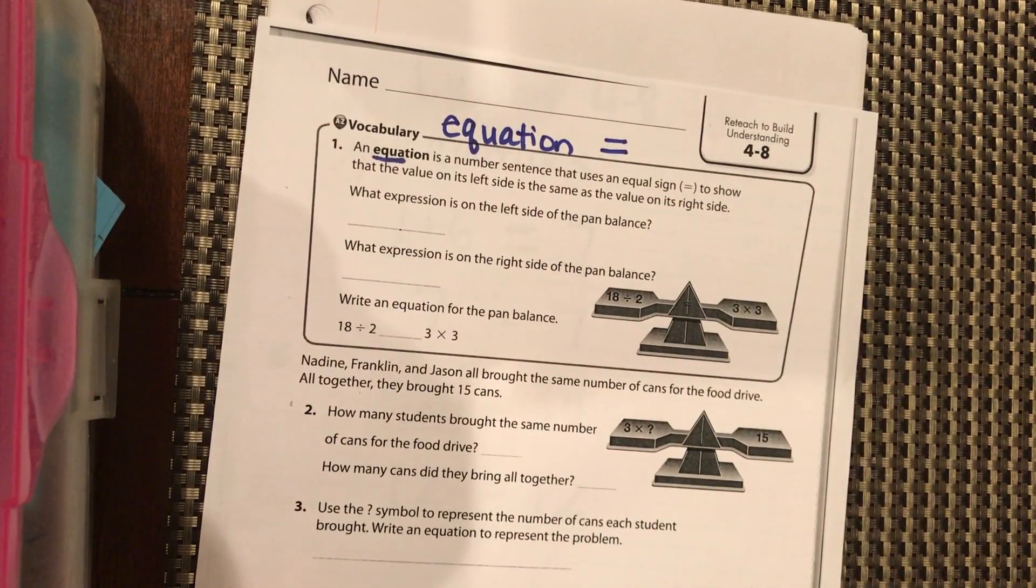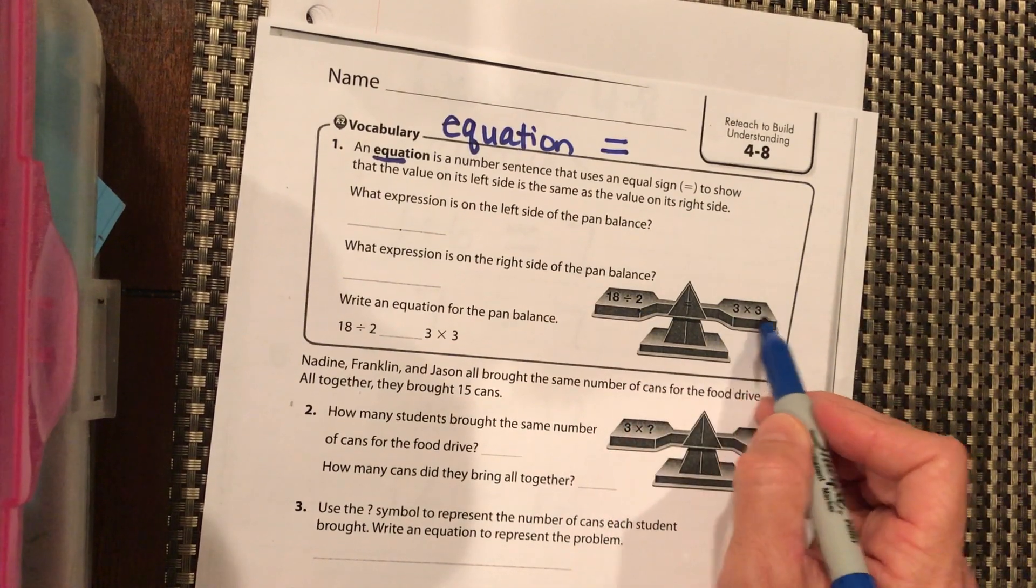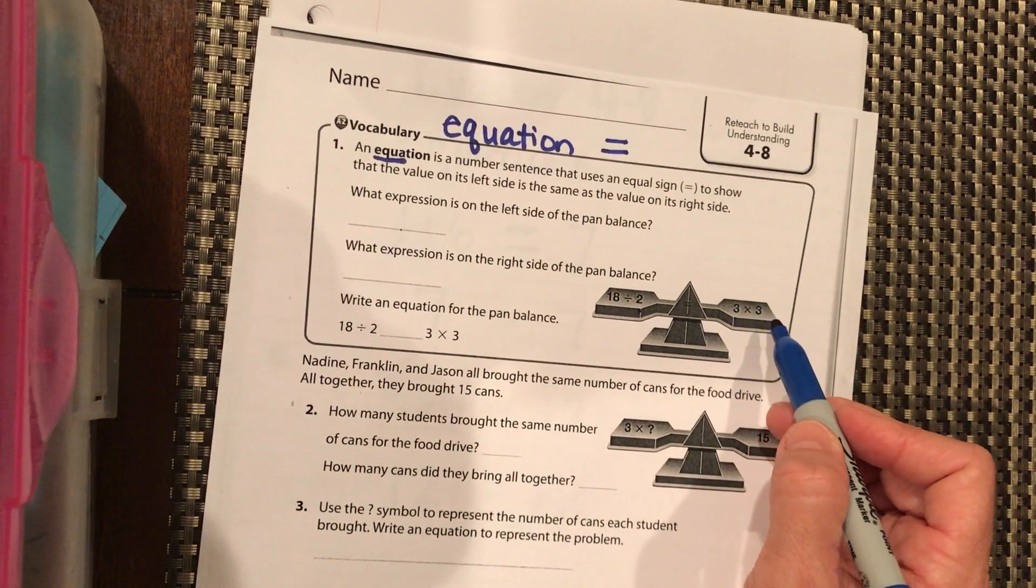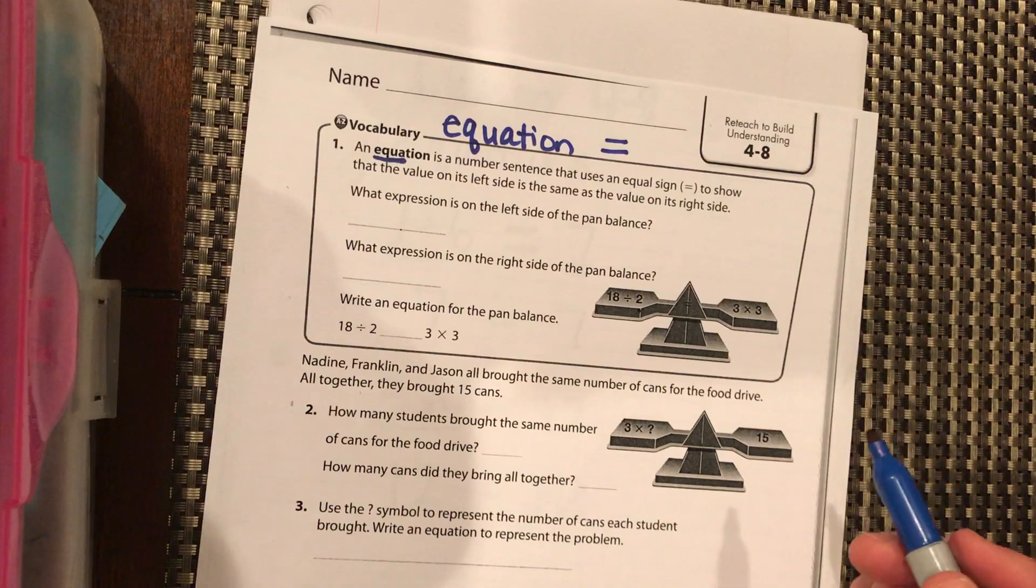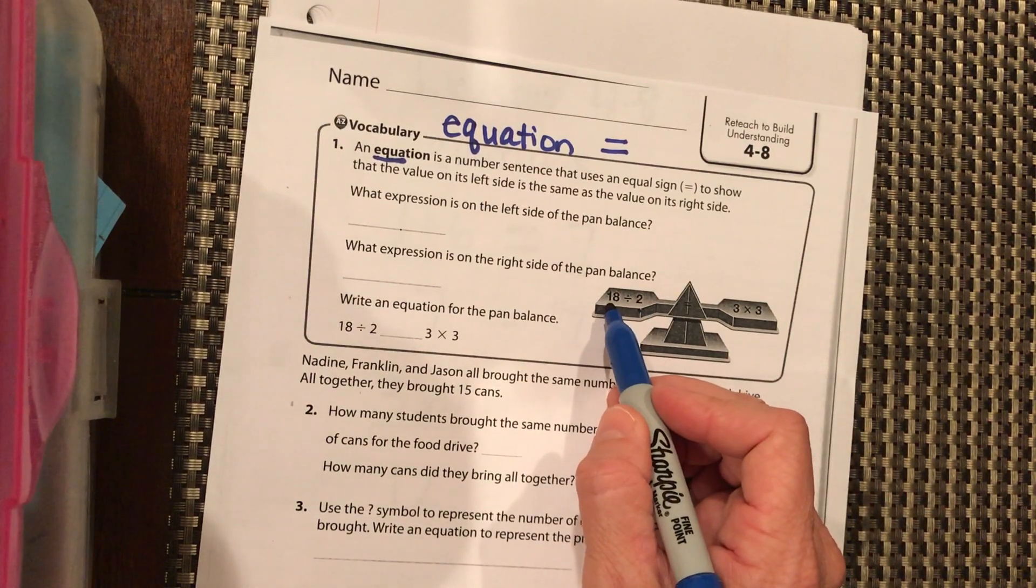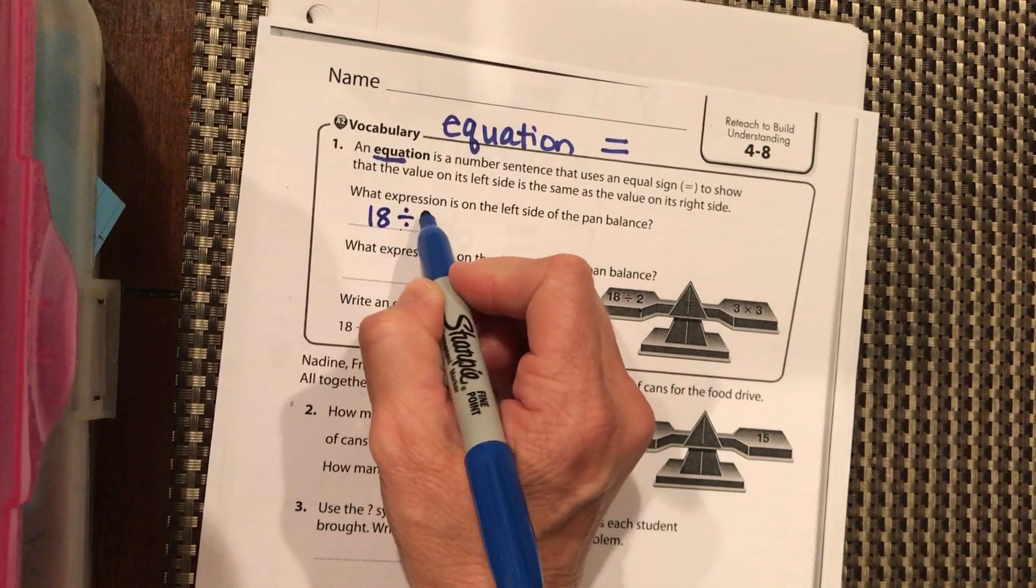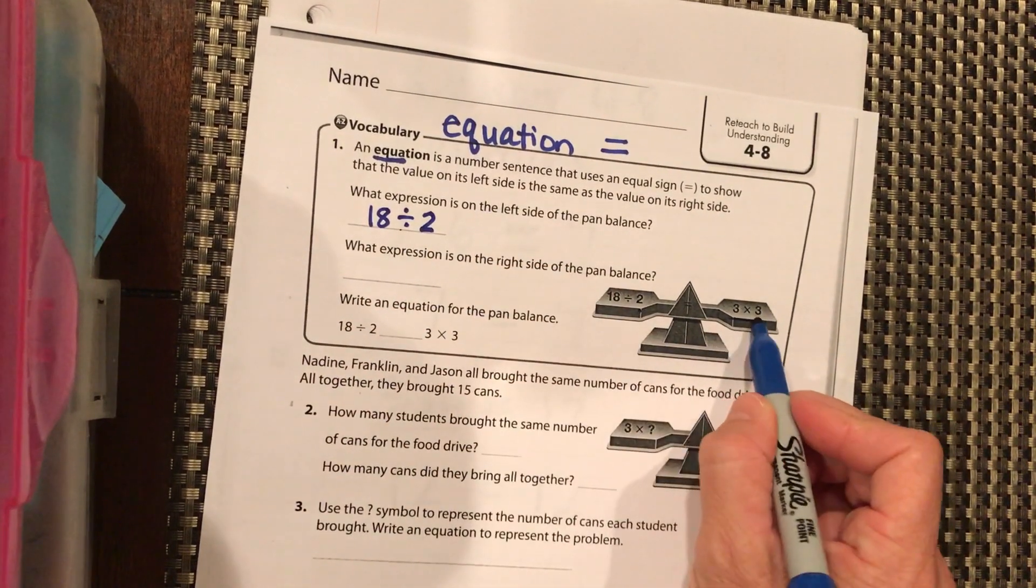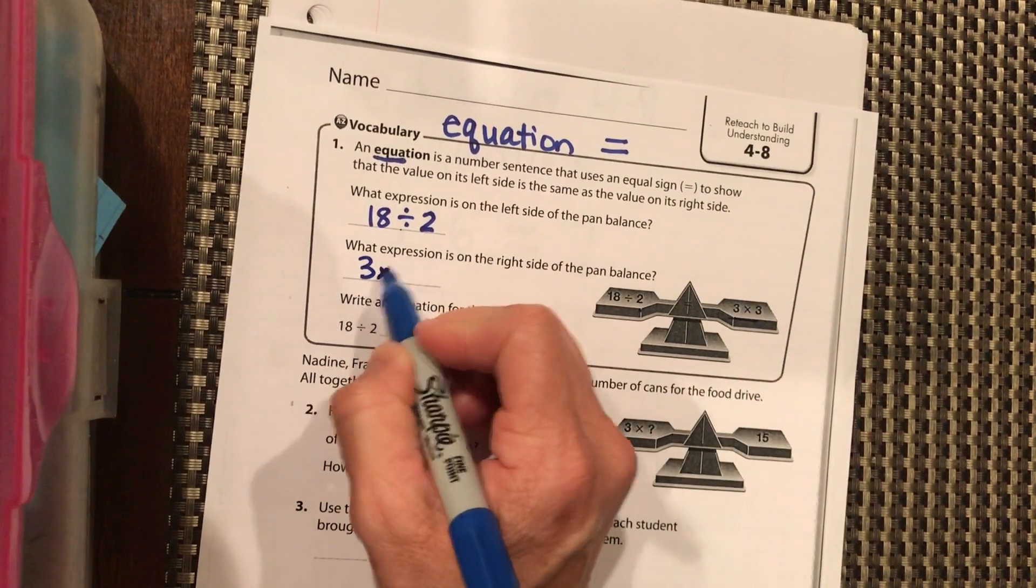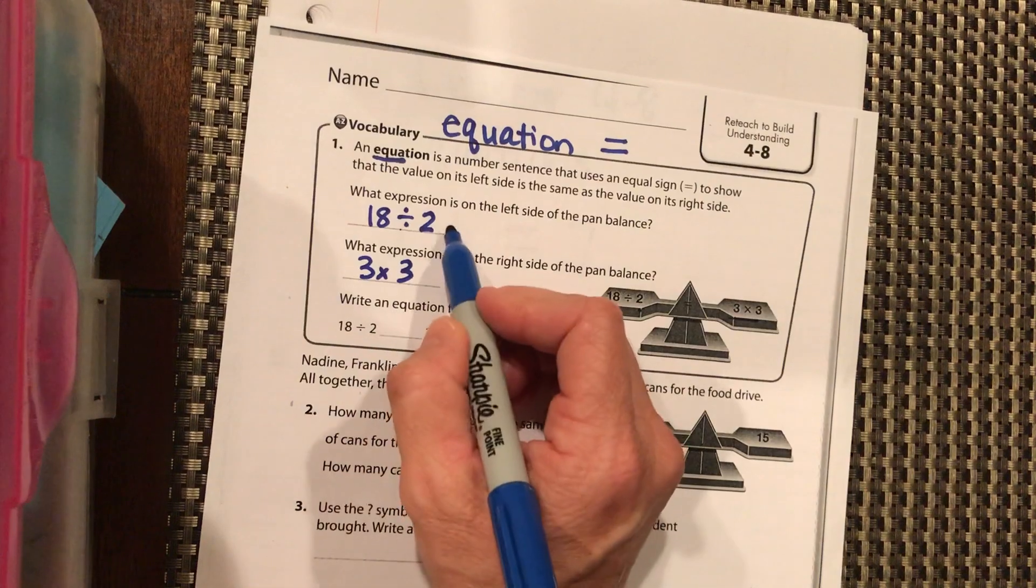If we're looking at this one, we have 18÷2 and we have 3×3. So what expression—expression means there's no equal sign—so the expression over here is 18÷2 and the expression over here is 3×3.